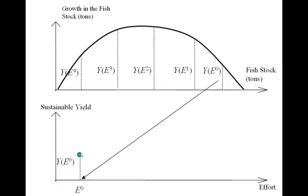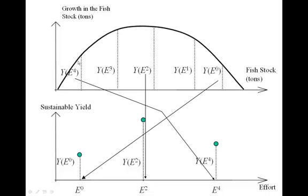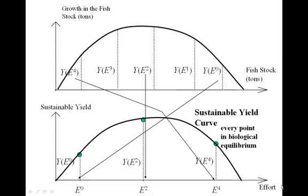This gives rise to a relationship between effort and sustainable harvest. We switch from a graph with fish stock on the horizontal axis to one with fishing effort. A low level of effort gives a low sustainable yield; a middle level of effort gives a higher sustainable yield; the highest level of effort brings us back down to a lower level of yield. This gives rise to our sustainable yield curve — a function of effort that tells us the amount of yield the fishery can produce year after year from a given quantity of effort.